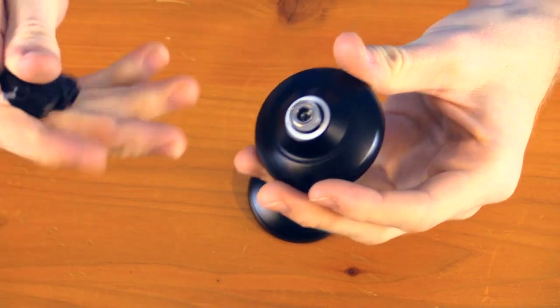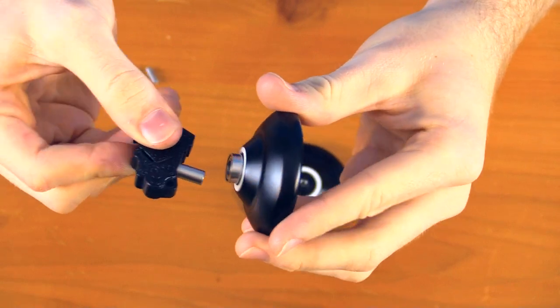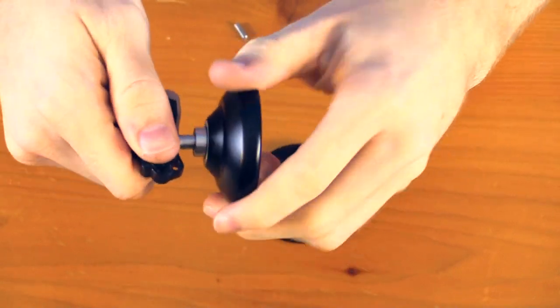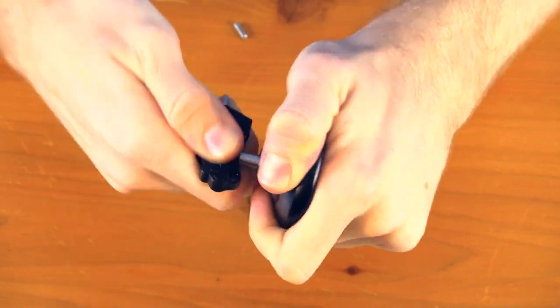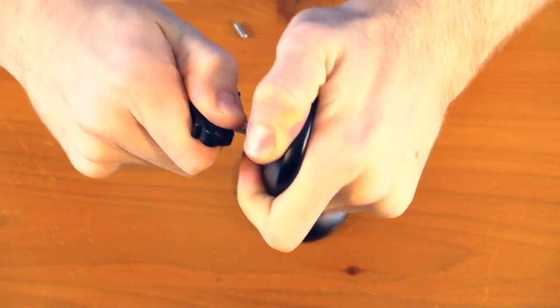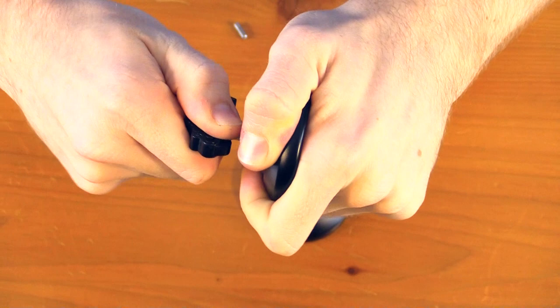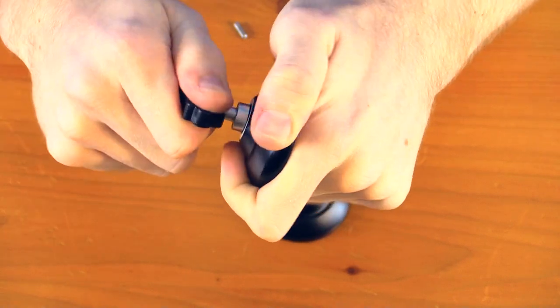And once you've done that, you need to put the bearing removal tool into the bearing, like this, and all that you need to do is give it a slight little wiggle back and forth for a couple seconds, and the bearing will come right out. If you're having some difficulty with this, you can ask mom or dad and they should be able to help you too.